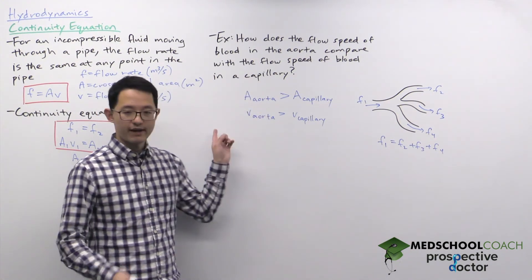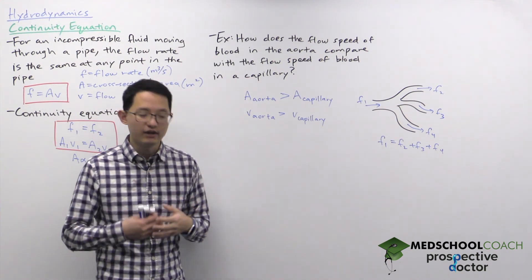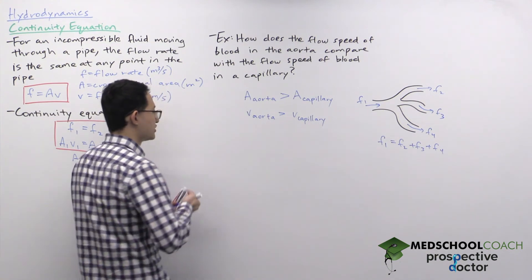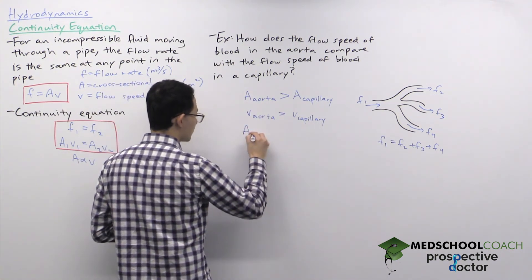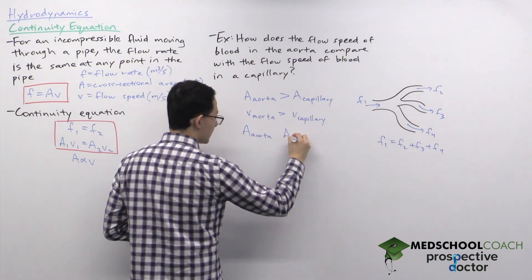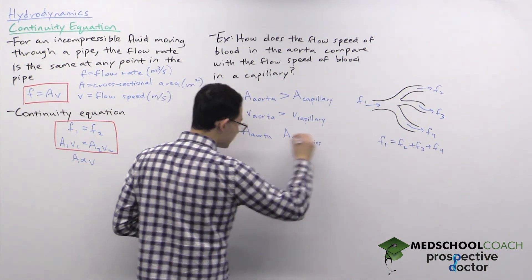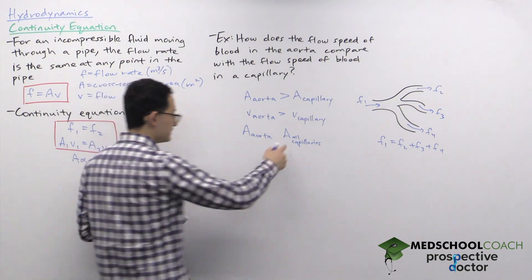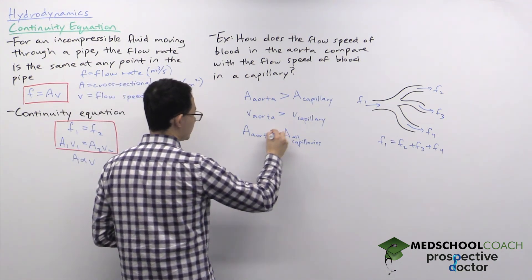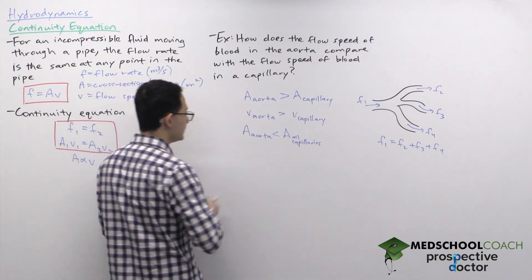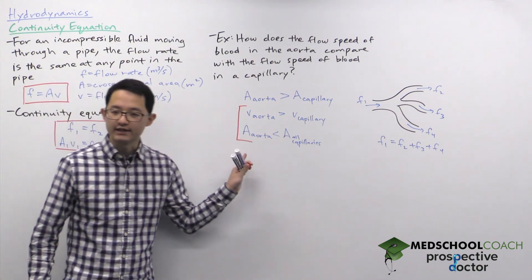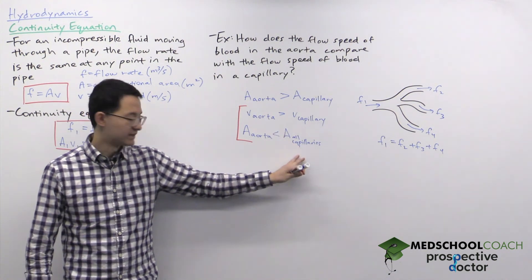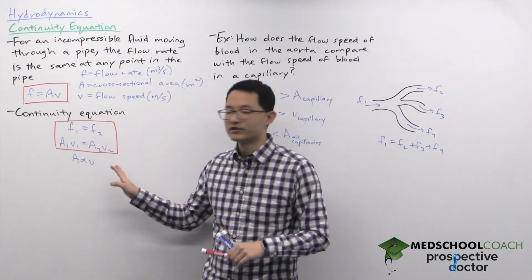Going back to our situation: the aorta does not go to a single capillary — it forms a huge number of capillaries. So to apply the continuity equation properly, we should compare the aorta's cross-sectional area to the total cross-sectional area of all capillaries in the body. When you add up the cross-sectional areas of all capillaries, the total is indeed larger than that of the aorta. This means blood flow speed is slower in the capillaries than in the aorta — and the continuity equation holds.